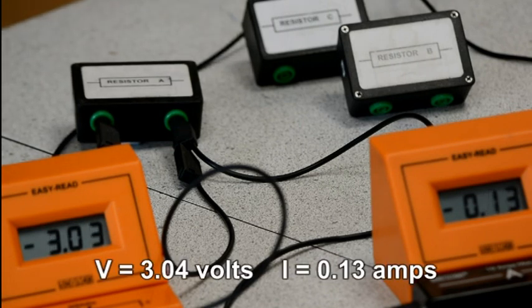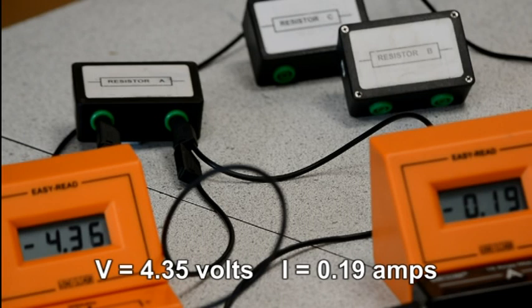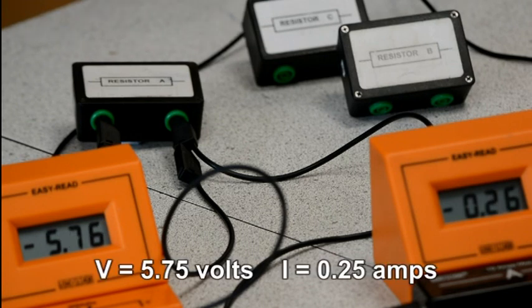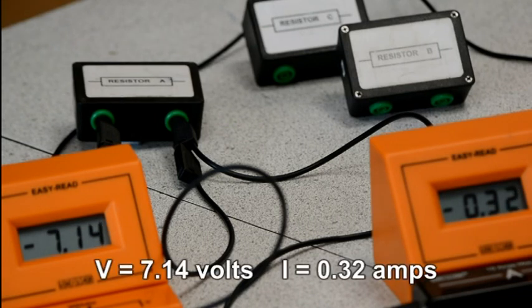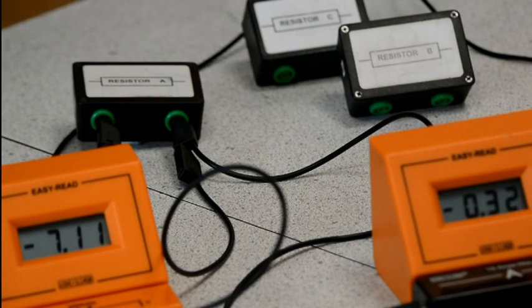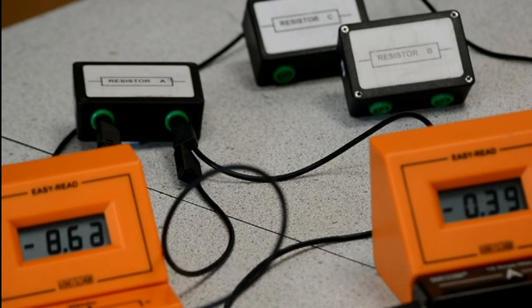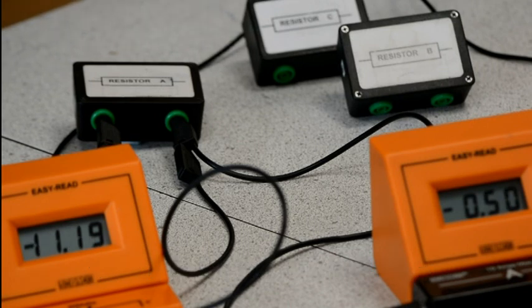Okay, 3.04 volts, 0.13 amps. 4.35 volts, 0.19 amps. 5.75 volts, 0.25 amps. 7.14 volts, 0.32 amps. 8.62 volts, 0.3 amps. And finally, 11.18 volts, 0.50 amps.